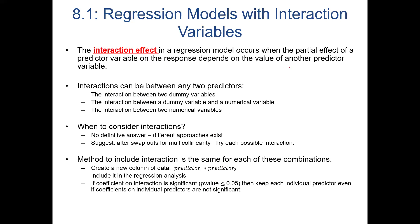The interaction effect can occur between any two predictors: two dummy variables, a dummy and a numerical, or any two numerical predictors. When do you consider interactions? There's no definitive answer; different approaches exist and this is an area of active research. In this introductory course, a good time to check interactions is after you've addressed multicollinearity — try each possible interaction of what's left in your top contender model, as it can sometimes improve the model significantly.